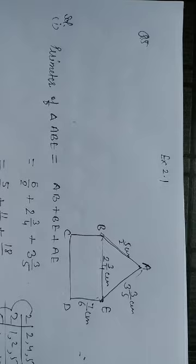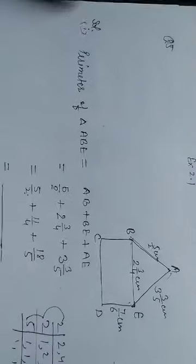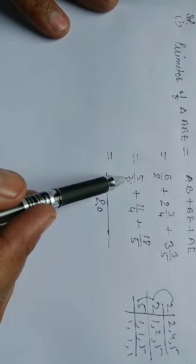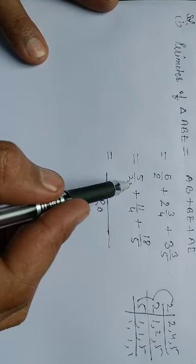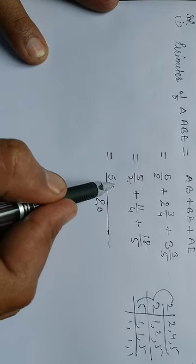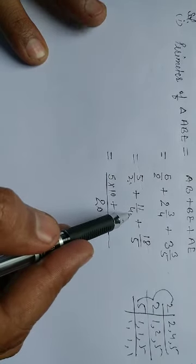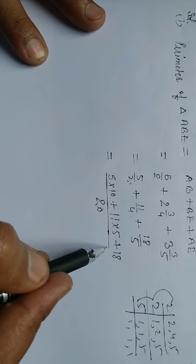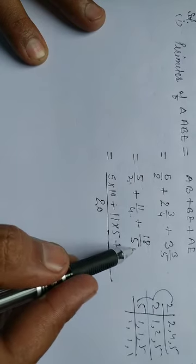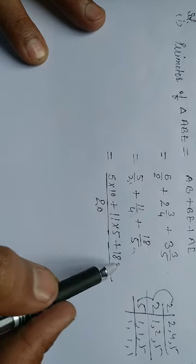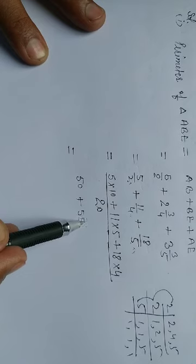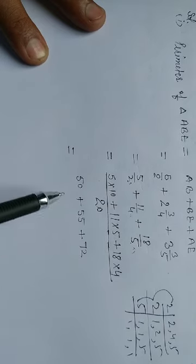The denominator here is 2, we need to make it 20, so we multiply by 10. The numerator also gets multiplied by 10, giving us 5×10. Here 4, we multiply by 5 to get 20, so 11 gets multiplied by 5. Plus 18, we multiply 5 by 4 to get 20, and the numerator by 4. So 5×10 is 50, plus 11×5 is 55, plus 18×4 is 72, all over 20.